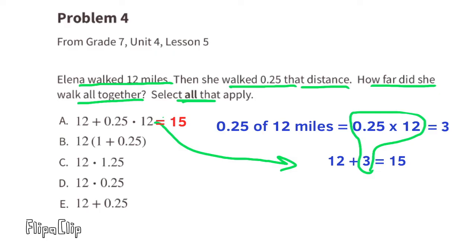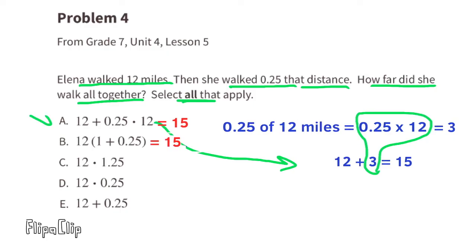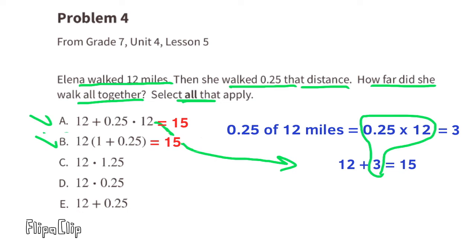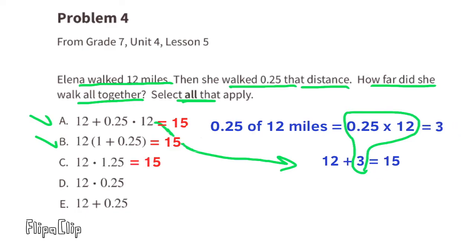I can select A because 12 plus a quarter of 12 is the same as 12 plus 3, or 15. I can also select B because 12 times 1 is 12, plus 12 times a quarter is 3, and 12 plus 3 equals 15. I can also select C because 12 times 1.25 equals 15. I'm not going to select D because 12 times a quarter gives me 3. That's the same thing as a fourth of 12, and a fourth of 12 is 3, not 15. I'm also not going to select E because 12 plus a quarter is simply 12.25, not 15.